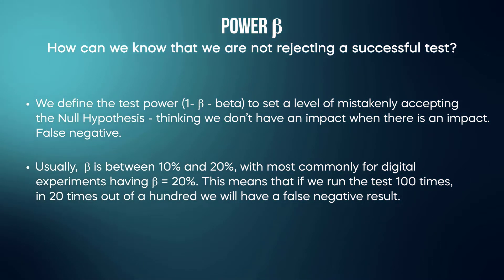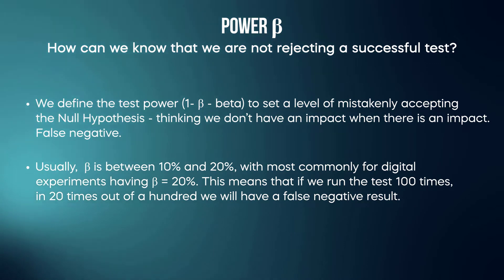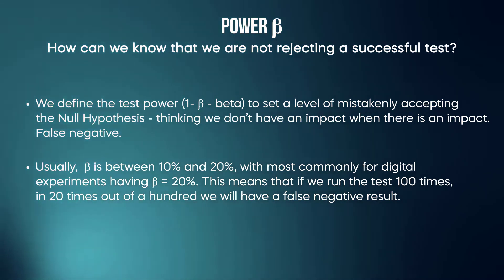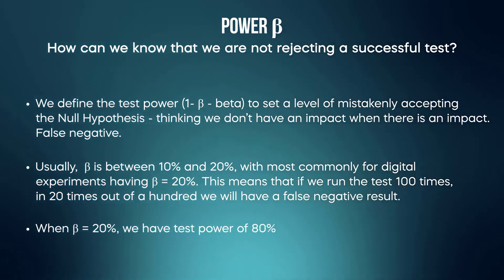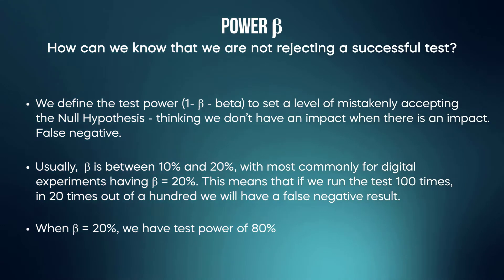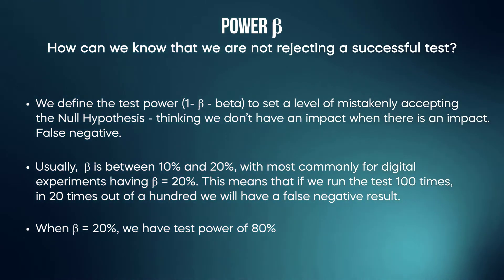This means that if we run the test 100 times, in 20 out of 100 we will have a false negative result. So when beta equals 20 percent, we have a test power of 80 percent.